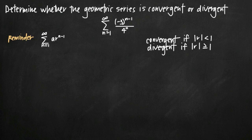Today we're going to be talking about how to determine whether or not a geometric series is convergent or divergent. We're going to be using the geometric series test for convergence. The series we're going to be testing is the infinite sum from n equals 1 to infinity of negative 3 raised to the n minus 1 power divided by 4 to the n power.